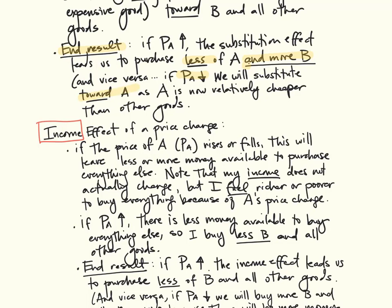Now, the income effect happens at the same time, and it pushes us in an opposite direction. For example, if the price of A rises or falls, this affects the amount of money we have to purchase everything else.